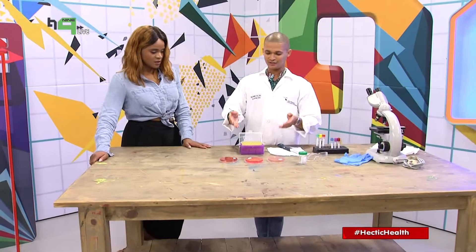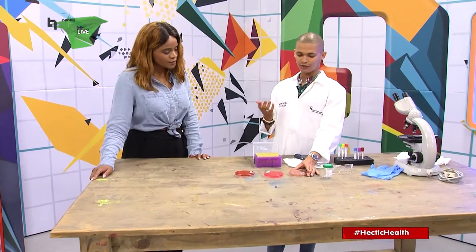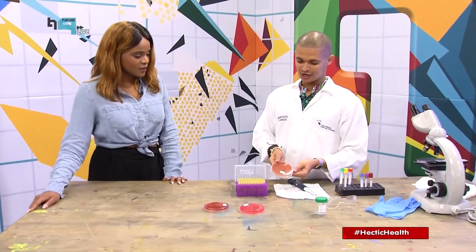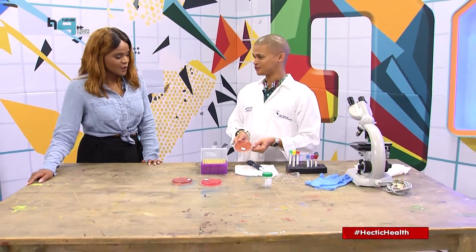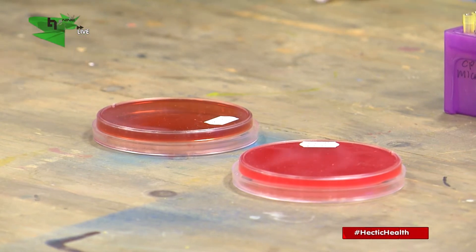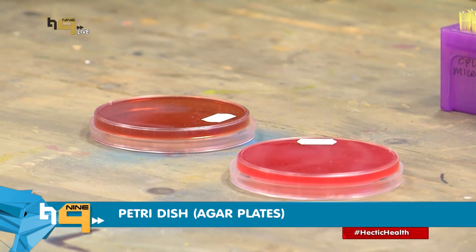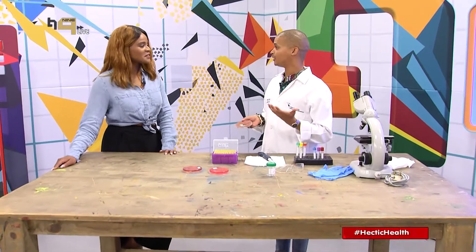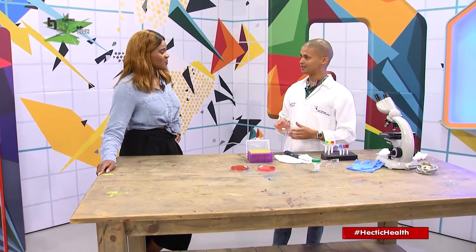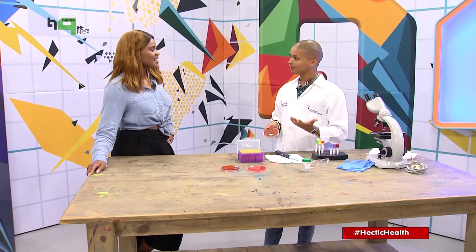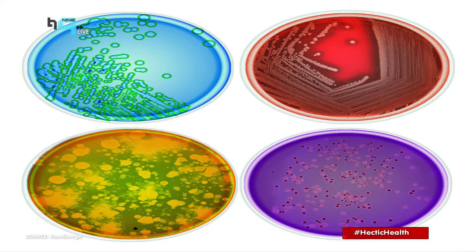We've got our petri dishes over here, commonly known to us in the lab as agar plates. The one I have here is a chocolate agar plate — as you can see, it's got a nice chocolatey color. Just like humans require nutrients, so does a bacteria. These plates contain all the necessary nutrients for the bacteria to grow. We grow and culture them on here, identify it, and then send it off to the doctor, who will then prescribe the necessary treatment or antibiotics to cure the patient.